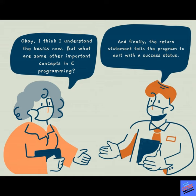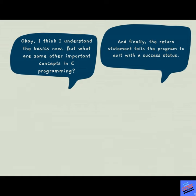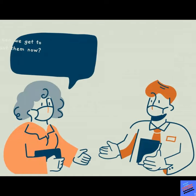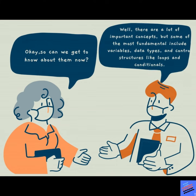Okay, I think I understand the basics now. But what are some other important concepts in C programming? Well, there are a lot of important concepts, but some of the most fundamental include variables, data types, and control structures like loops and conditionals.